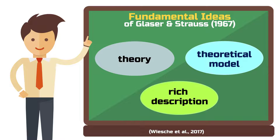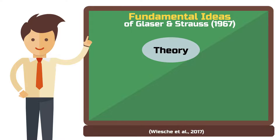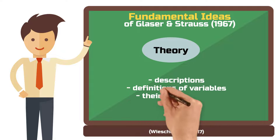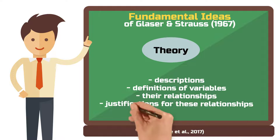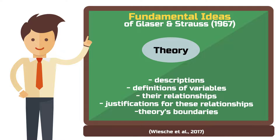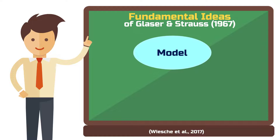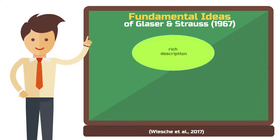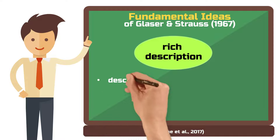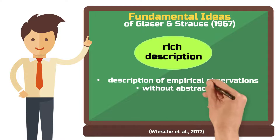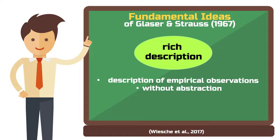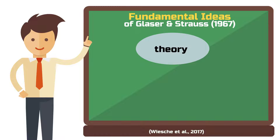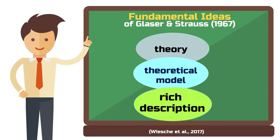All three outcomes are accepted in the literature and have their own value. A theory consists of descriptions, definitions of variables, their relationships, justifications for these relationships, and the theory's boundaries. A model consists of definitions of abstract variables and their relationships. A rich description is the description of empirical observations without the abstraction to a theoretical level. Developing a fully fleshed theory is the most challenging endeavor, followed by a model, and then followed by a rich description.